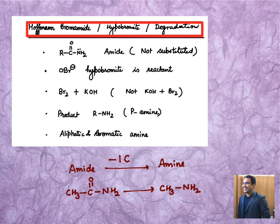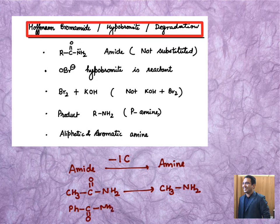It can be any aliphatic amine or it can be an aromatic amine as well. For example, let's say you are given Ph-CO-NH2. Now with Ph-CO-NH2, what is our expectation? We should expect Ph-NH2 after losing carbon dioxide out of it.